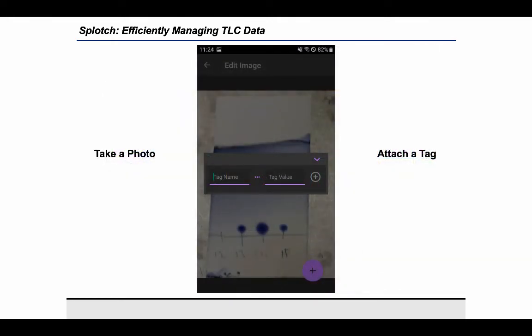Start by taking a photo of your TLC and giving it a tag. This could be the name of the experiment, the solvent system that the TLC was run in, or the stain that it was developed in, for example.